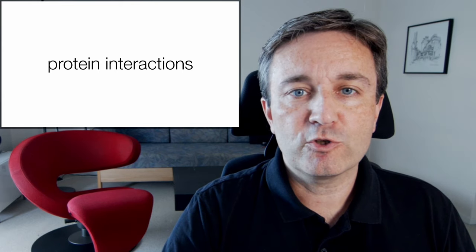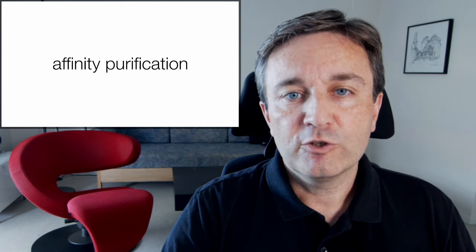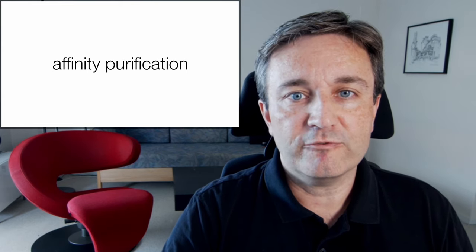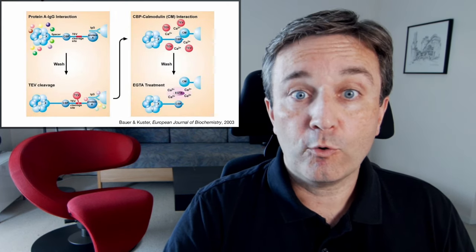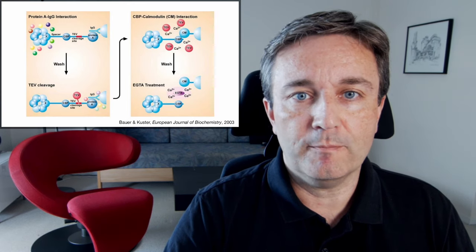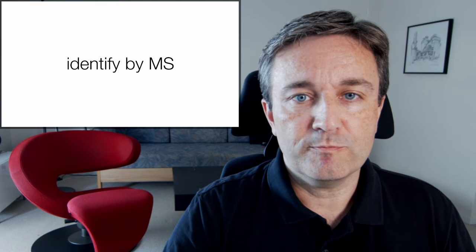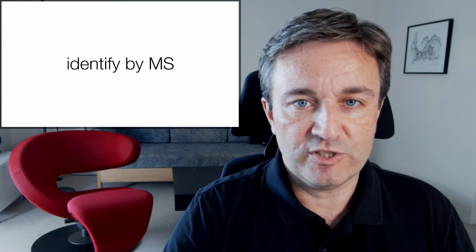Finally, you might want to look at protein interactions. Using affinity purification is a very popular approach in which you tag a bait protein and use it to pull down all the interaction partners that it forms complexes with. You can then use mass spectrometry to identify what's in the pull-down.